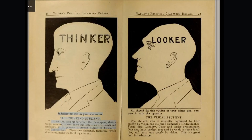The thinking student. Think out and understand the principles, definitions, causes, laws, and solutions — to possess a strong degree of causality and comparison. All should fix this outline in their minds and compare it with the opposite. The visual student. The student who is mentally organized to learn chiefly by vision has the mind elements of individuality, form, size, locality, color, and order predominant. One may have perfect eyes and be weak in these faculties and learn very poorly by vision. This is a great fact for educators.